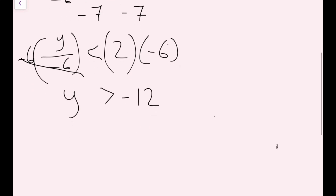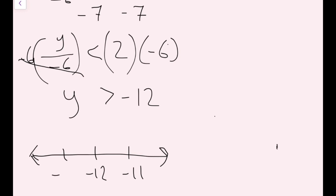To graph this, I'll draw my number line and put three values: negative 13, negative 12, and negative 11. Since there's no equal to, I'm going to have an open circle. And since it's greater than, we want all the values that are larger than negative 12, so I'm going to have this arrow point to the right. And now we're done with this one.